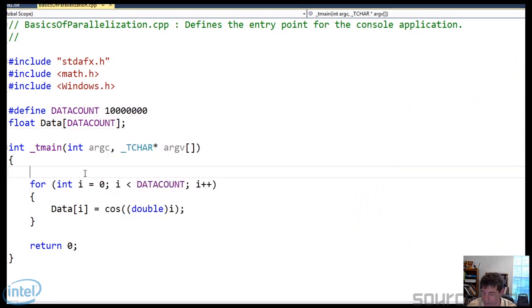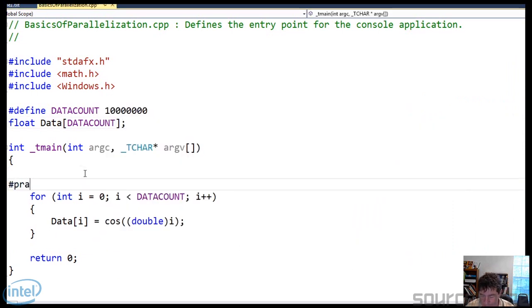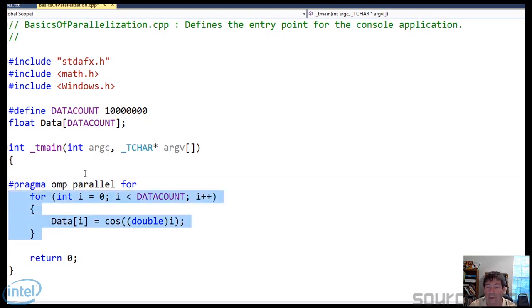The next thing I'm going to do is decorate this with a pragma, and that is all I have to do. OpenMP will take and parallelize this loop at runtime according to how many threads and how much resources it can get.